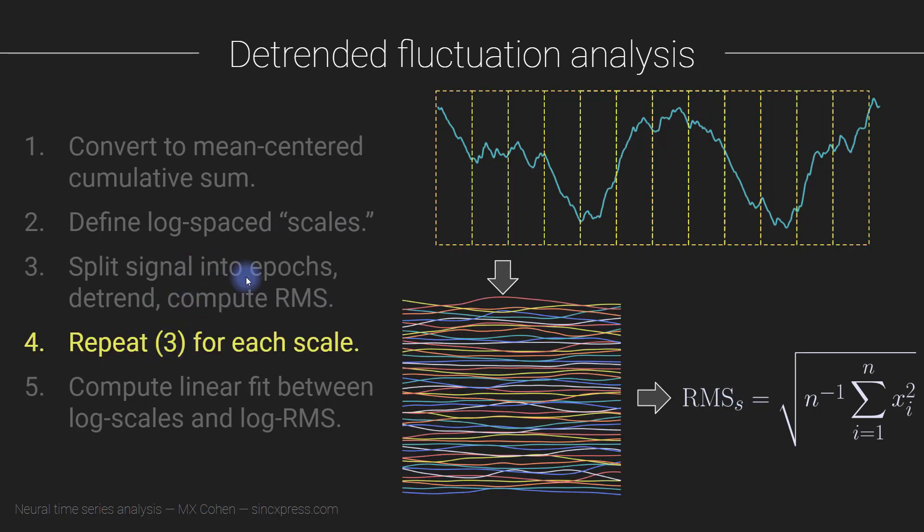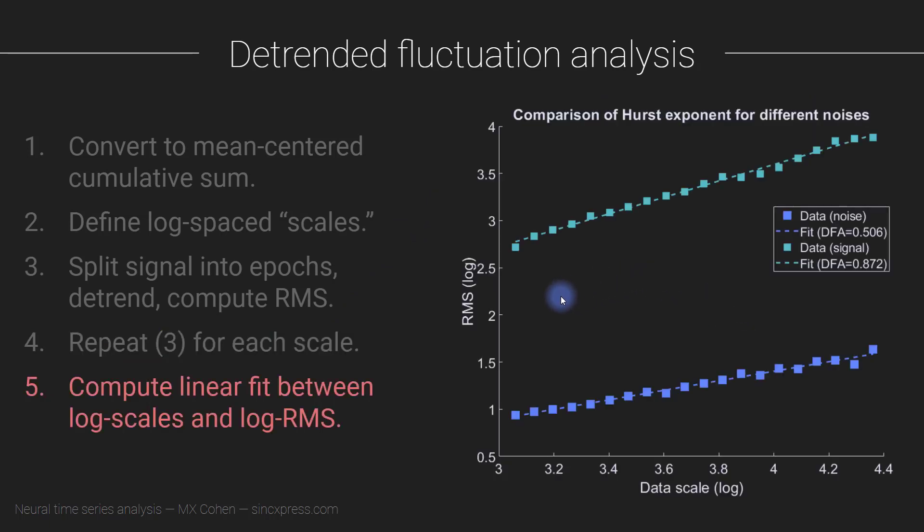Okay, and then we repeat this step for all of the different scales. So previously I said that was 23 seconds, maybe this one is 18 seconds or something. So this is now 18 seconds instead of 23 seconds. So when you finish going through this procedure, you will have a vector of scales that I showed a moment ago, and a vector of root mean square values. And then you plot them on a line in a plot where the axes are both log scaled. So this is the log of the root mean square and the log of the data scale or the time scale.